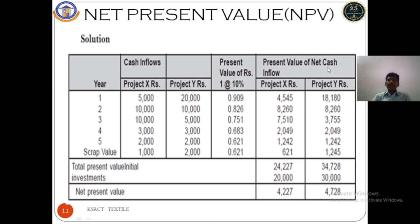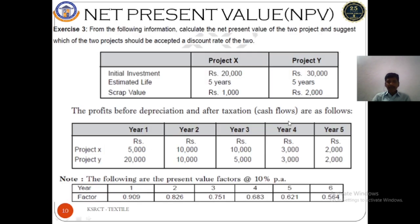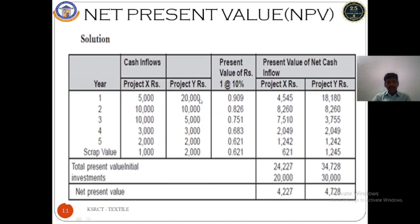We compute the present value of net cash flows for both projects by multiplying each year's cash flow by the corresponding present value factor. For Project X, for example, 5,000 multiplied by 0.909 gives 4,545. For Project Y, 20,000 multiplied by 0.909 gives 18,180. We continue this for all 5 years. An important point is the scrap value — both projects have a 5-year life, so the scrap value is discounted using the year 5 factor of 0.621. Adding all present values, Project X gives a total of 24,227 and Project Y gives 34,078.